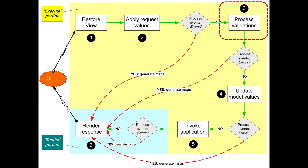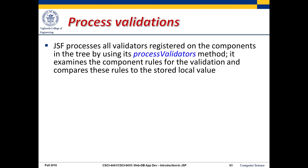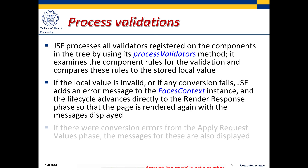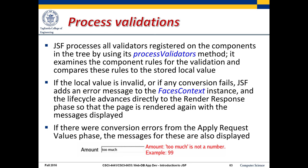Step three: process validations. At this point, all the validators registered with the components are executed. Every component is checked against the rules defined for it. If any are invalid, or if any conversion failed in the previous step, error messages are added and the cycle jumps right to step six — no reason to continue if errors are caught. If there were conversion errors from the apply request values phase, those messages are also displayed here.